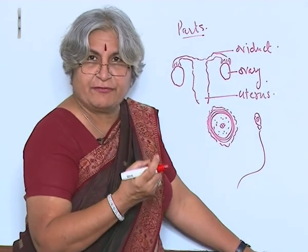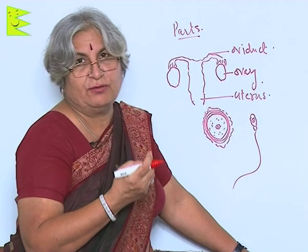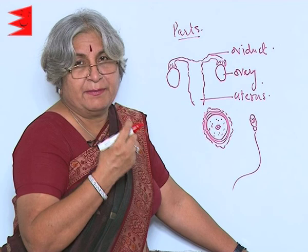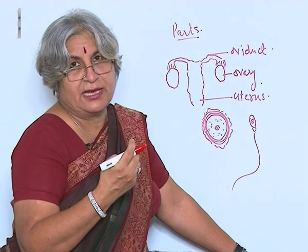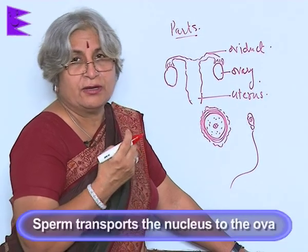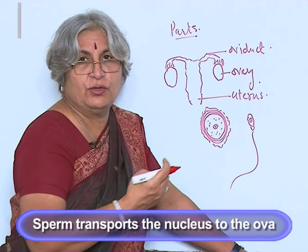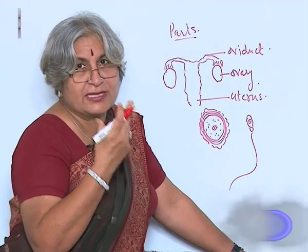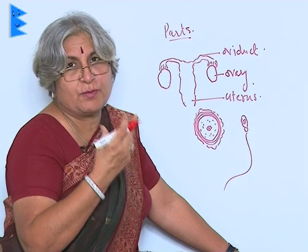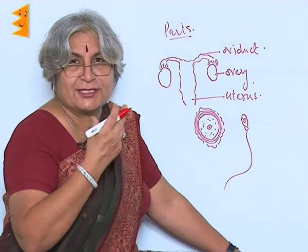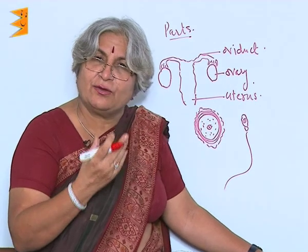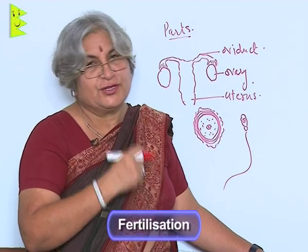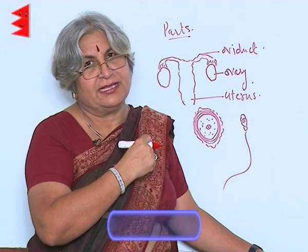So what makes the difference in size? The amount of cytoplasm. In the sperm, the main thing is only the nucleus, and the role of the sperm is to transport this nucleus to the ova, and then the two unite. This union is the most powerful process — it is this union which starts a new life, and this is called fertilization. So now we will study about fertilization.